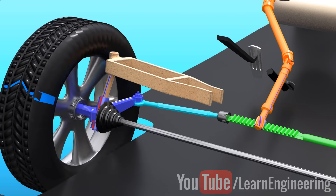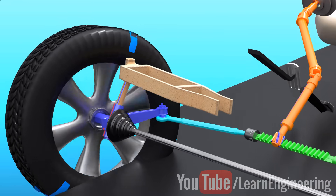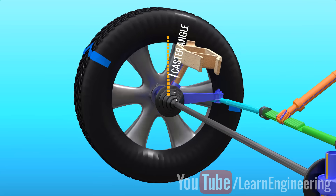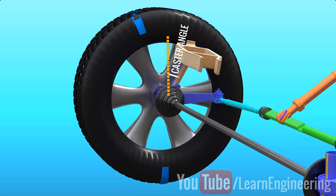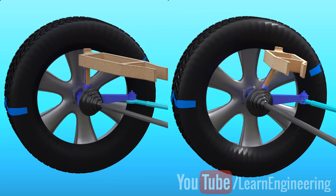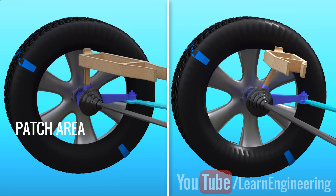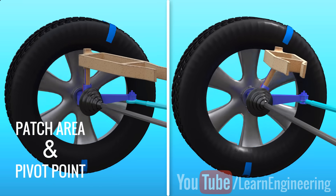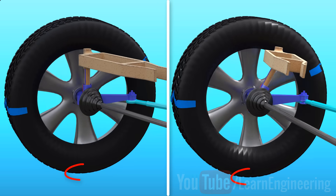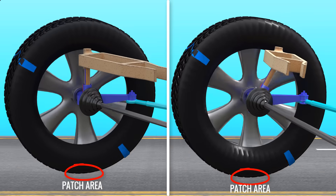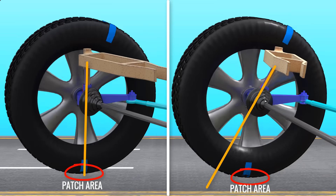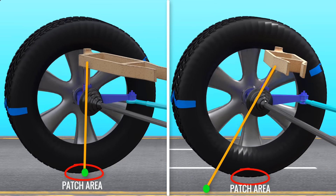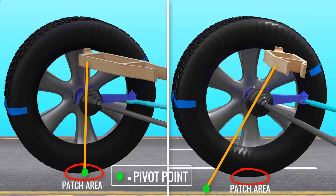You will get a clear picture of this angle when it is viewed from the side. Let's watch how this steering mechanism works. When you understand the concepts of patch area and pivot point, you will notice a big difference. Patch area is the area where force is transferred to the wheels. It is clear that the wheel is pivoted to turn around at the meeting point of the steering axle and road. Let's call this meeting point the pivot point.